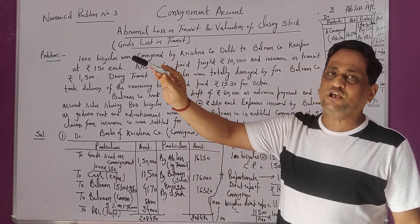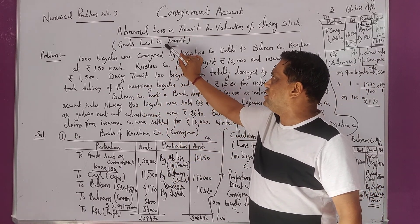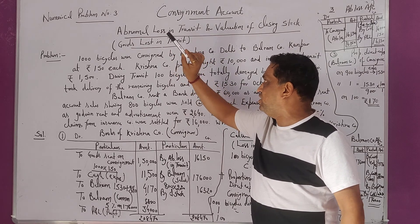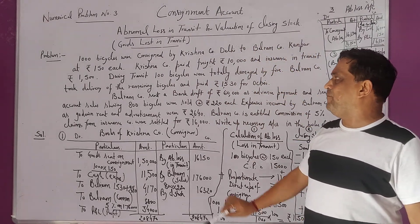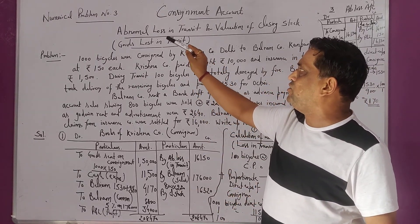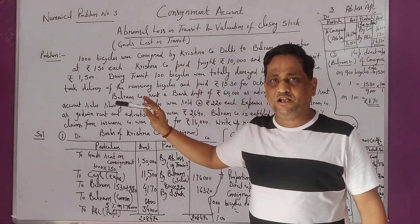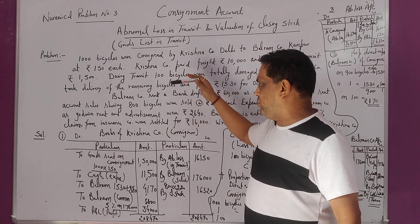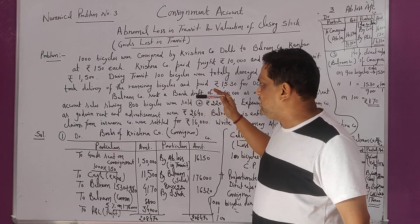When we have transported goods on consignment and goods are lost in transit, how is this calculation done? We also need to calculate valuation of closing stock. We need to analyze the problem — which duty is the direct expenditure and which duty is the indirect.